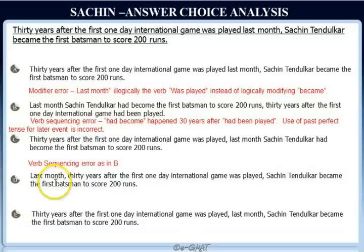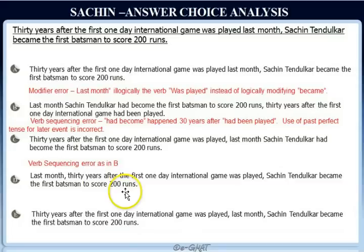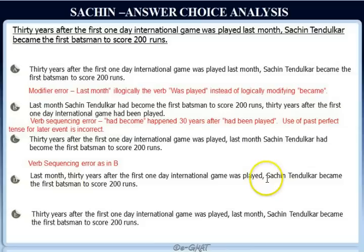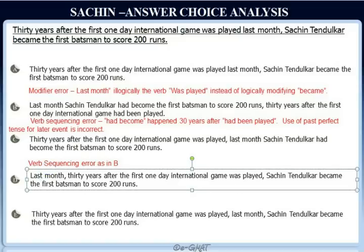Choice D reads: 'Last month, 30 years after the first one-day international game was played, Sachin Tendulkar became the first batsman to score 200 runs.' This sentence doesn't have any verb sequencing error. Checking the modifier: 'Last month,' comma, '30 years after the first one-day international game was played,' comma — so 'last month' belongs in the clause with the verb 'became.' Based on the placement of the commas, it modifies the correct verb 'became,' and that's why it is the correct answer choice.